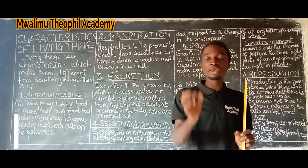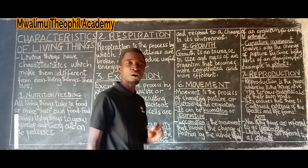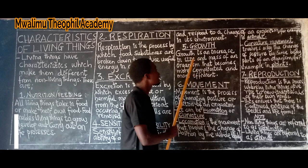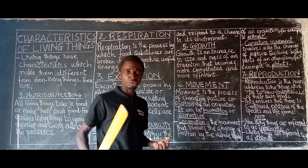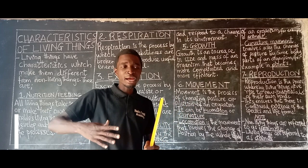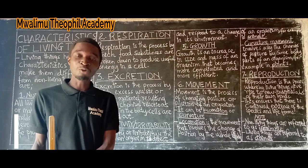The next characteristic of living things is growth. Growth is an increase in size and mass of an organism that becomes more complicated and more efficient. When an organism increases in size over a given time period, we say growth has taken place.